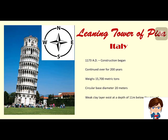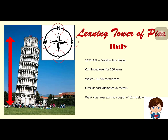The tower tilted first to the east, then north, then west, and finally to the south. Recent investigations showed that a weak clay layer exists at a depth of 11 meters below the ground surface, compression of which caused the tower to tilt. At a height of 54 meters, it became more than 5 meters out of plumb.